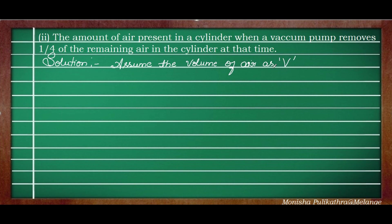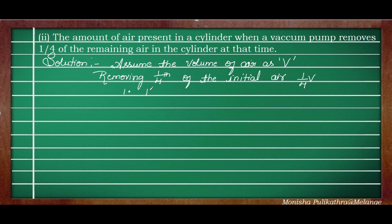In the solution, we assume the initial volume of air as V. After the first stroke, we remove 1/4th of V. So the remaining air = V − V/4 = (4V − V)/4 = 3V/4. In the first stroke, the remaining air is 3V/4.